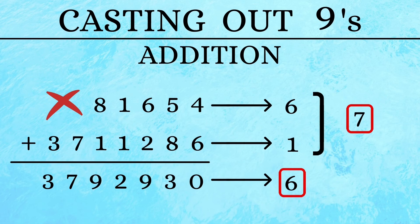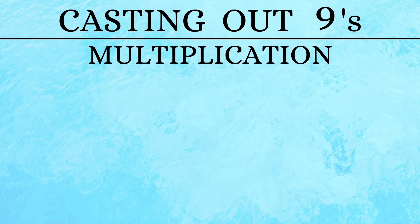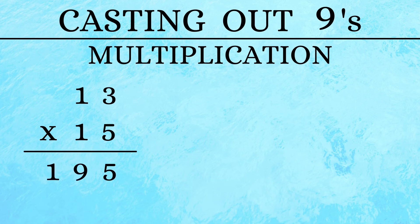We could also use the same method to check out calculations involving multiplication. Let us start off with multiplication of two small numbers. 13 times 15 is 195. As usual, we start off with the answer. First cancel out the 9. Then we add 1 and 5 to get 6.